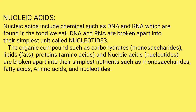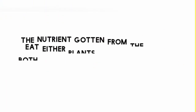The organic compounds — carbohydrate, lipid, protein, and nucleic acid — are broken apart into their simplest nutrients. The simplest nutrient of carbohydrate is monosaccharide, for lipid it is fatty acid, for protein it is amino acid, and for nucleic acid it is nucleotide.